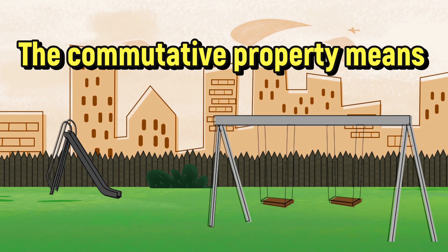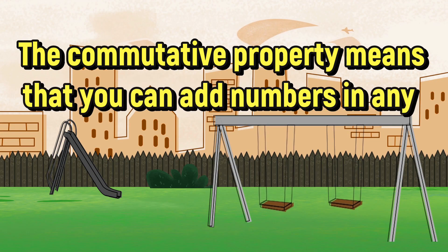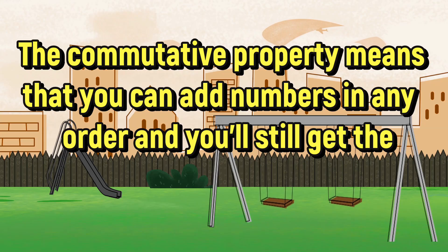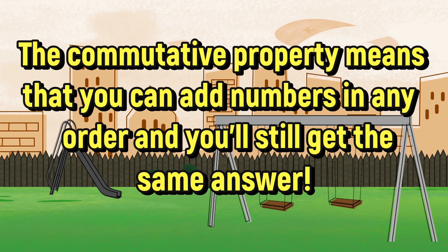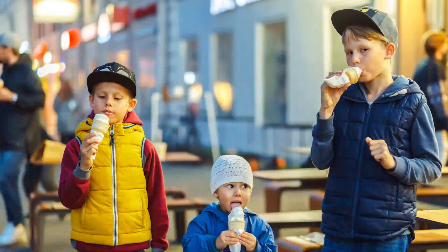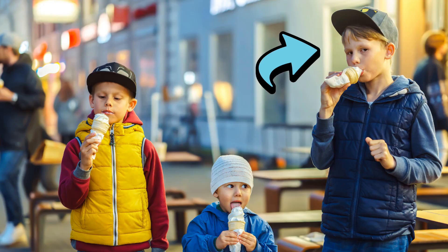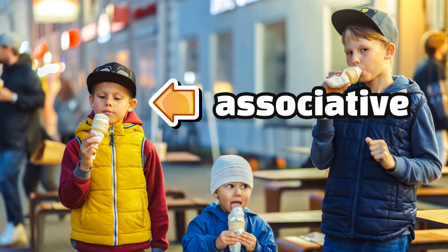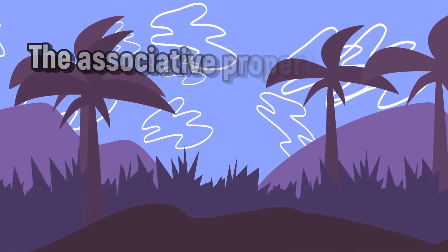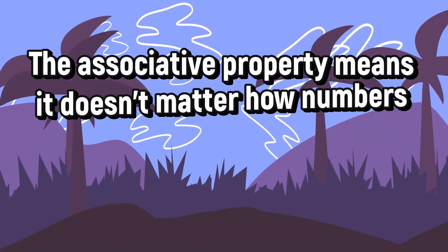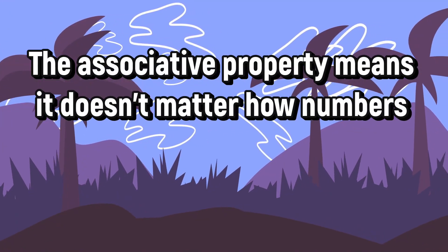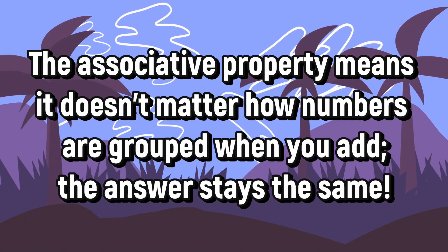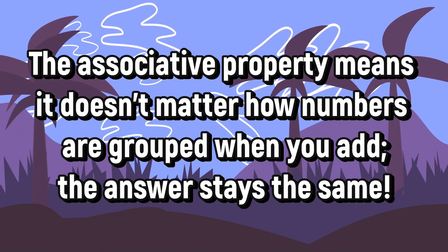That's the commutative property — you can add numbers in any order and you'll still get the same answer. Now, what about the associative property? The associative property means it doesn't matter how numbers are grouped when you add. The answer stays the same.